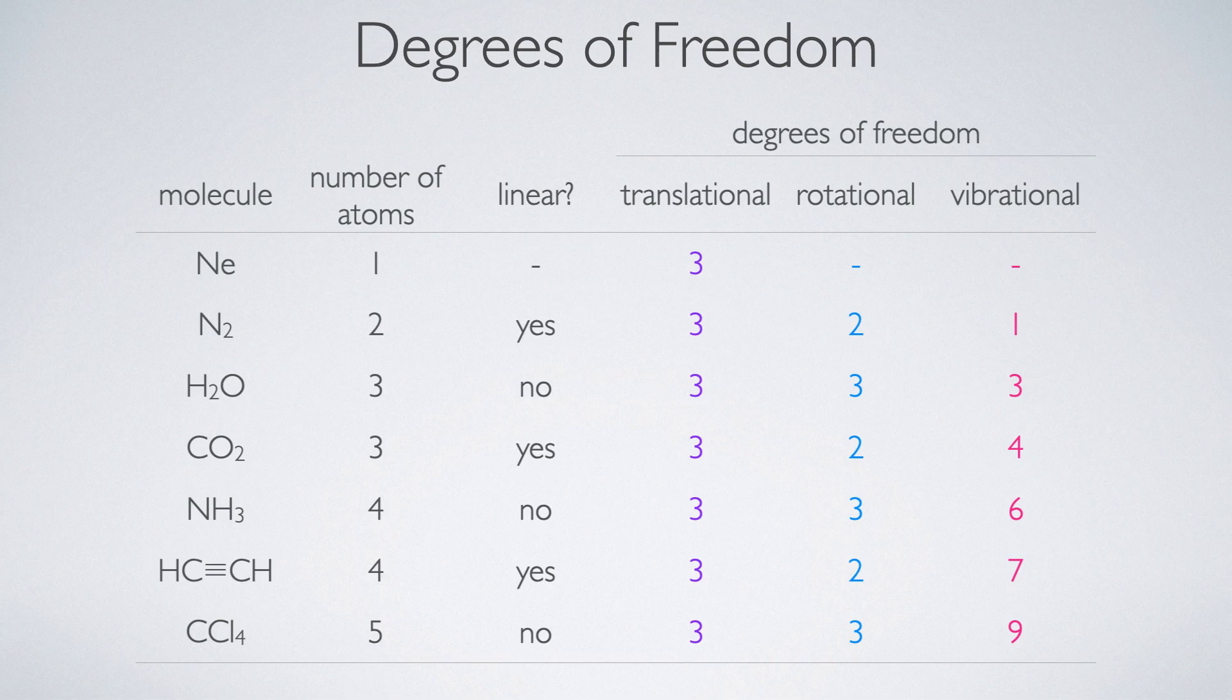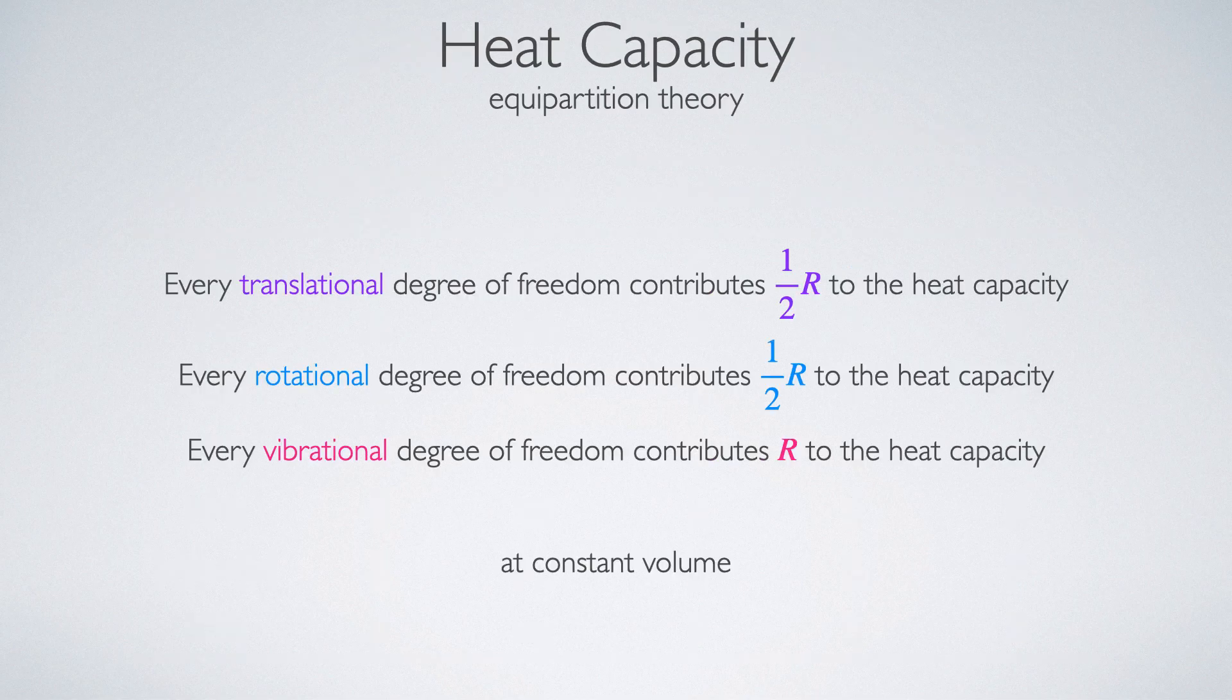Now, how does this relate to heat capacity? So equipartition theory says that for every translational degree of freedom, I contribute 1 half R to the heat capacity. For every rotational degree of freedom, I contribute 1 half R to the heat capacity. And for every vibrational degree of freedom, I contribute R to the heat capacity. Now, these are all heat capacity at constant volume.